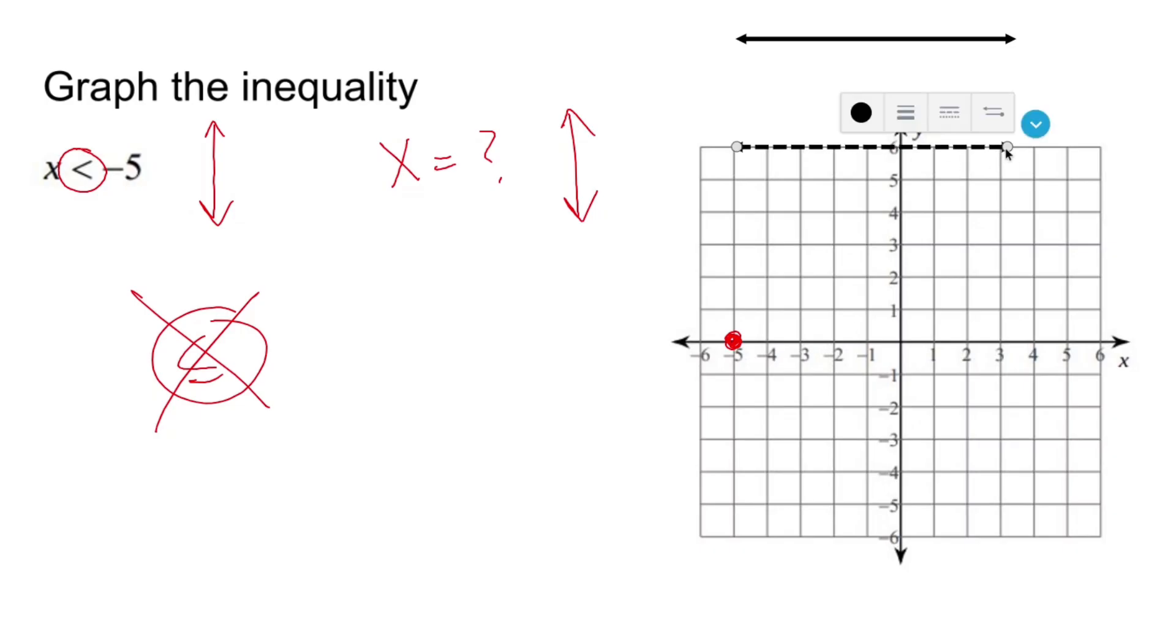So I'm going to choose this dashed line and have it go through negative 5. The dashed line means that the line doesn't count. You're not allowed to include any points on this line right here.